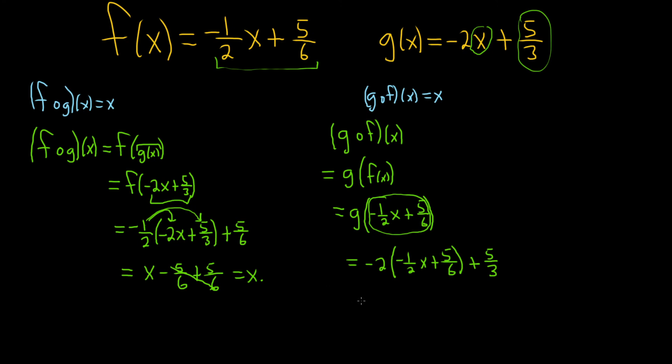All right, let's distribute this negative 2. So negative 2 times negative 1 half x - we're just going to get x here, the negative 2 cancels with the 1 half. And then negative 2 times 5 sixths - 2 goes into 6 three times and will become negative. So you get negative 5 thirds. Then we have this hanging out 5 thirds here. How convenient. It's rigged. And so we get x. So we're done.